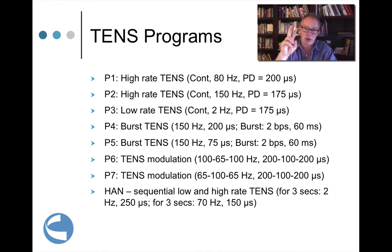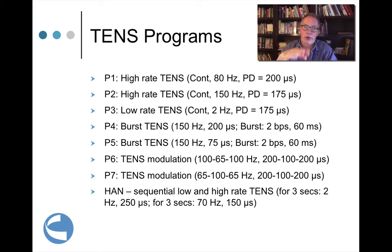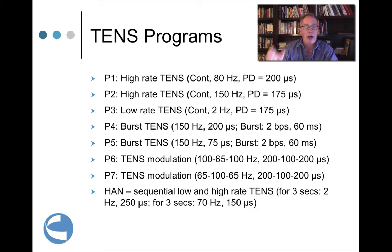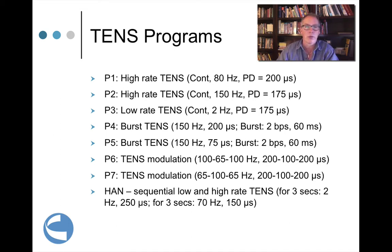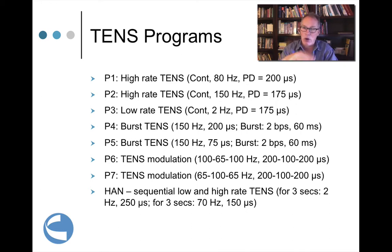You've got two types of programs: TENS programs and NMES programs. On this slide you see all the pain control programs — the TENS programs. You've got P1 all the way through P7, seven different programs with slightly different parameter sets, and then a final one which is the HAN program. Remember the pain control mindset: you either want to inhibit pain right now using the gate control theory, or you focus more on having the body produce chemicals — endorphins, enkephalins, endogenous opioids — for pain relief that lasts a little bit longer.